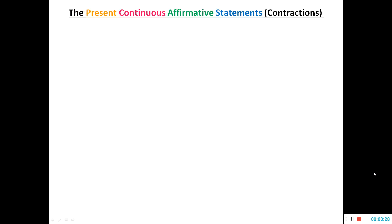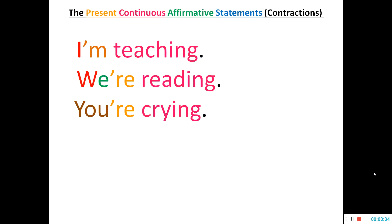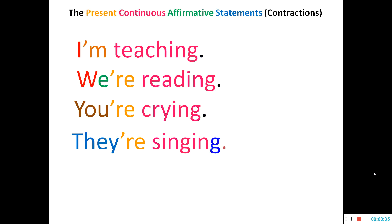You can always make contractions like 'I'm teaching', 'we're reading', 'you're crying', 'they're singing', etc. Contractions are generally used in speech and in informal writing. In formal writing, we use the expanded form only.